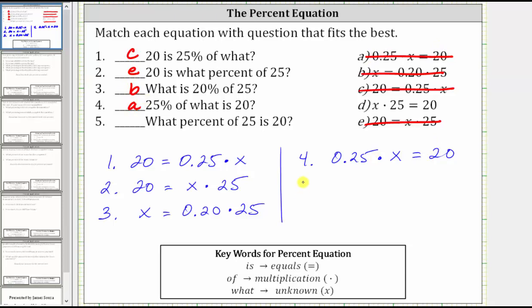And finally, for number five, we know it should be D. Let's go ahead and set it up. We have what or what percent, which represents the unknown, which is x, of 25, so times 25. And then 'is 20' means equals 20, which does match equation D. I do want to mention some of these equations are equivalent, but this is how we would write the percent equation using the keywords. I hope you found this helpful.